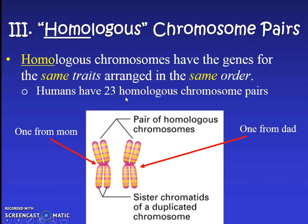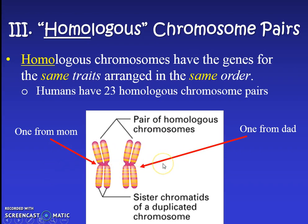For instance, one chromosome might carry hair color and eye color from your mom, and the matching one carries hair color and eye color from your dad, and they combine in this pairing to decide what your hair color and eye color might be. This is diploid — one copy from mom and one copy from dad. All of our body cells are diploid.